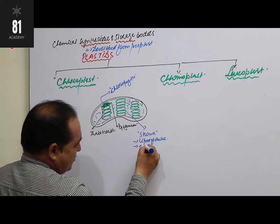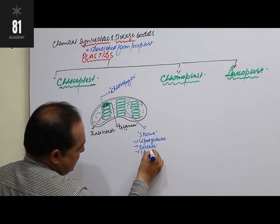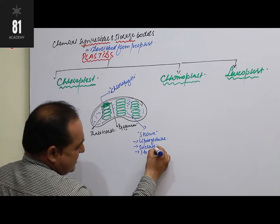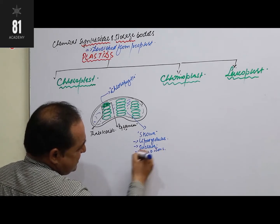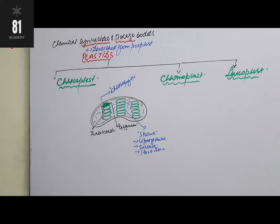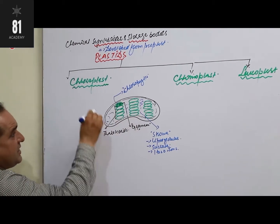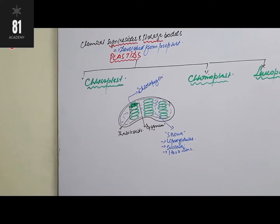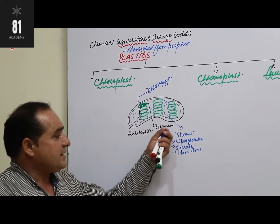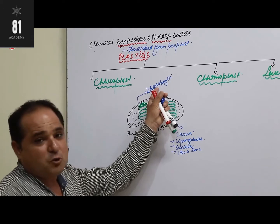The stroma also contains sucrose, water, different ions, and other organic materials. So chloroplast is a double membrane structure in which chlorophyll is arranged in the form of thylakoids and grana.